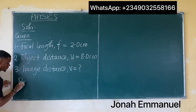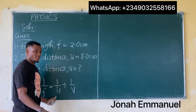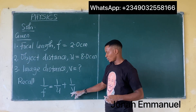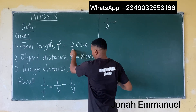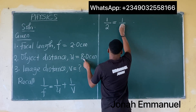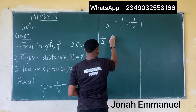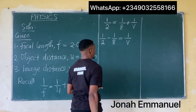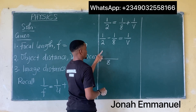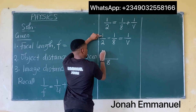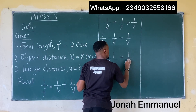Recall the mirror formula: 1 over f equals 1 over u plus 1 over v. This is a concave mirror so the sign is positive. Substituting: 1 over 2.0 equals 1 over 8 plus 1 over v. Rearranging: 1 over 2 minus 1 over 8 equals 1 over v. Taking LCM of 2 and 8, which is 8: we get 4 over 8 minus 1 over 8 equals 1 over v.